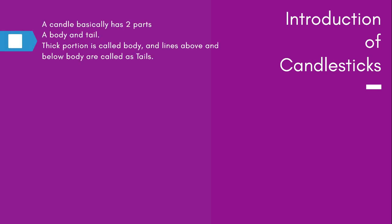Now let us begin the introduction of candlesticks. A candle basically has two parts: a body and a tail. The thick portion is called the body and the lines above and below are called the wick or shadow. You might have seen candlesticks on charts — red and green bars with a thick body in between and two projections up and down called the wick.